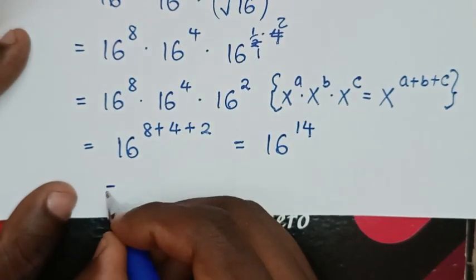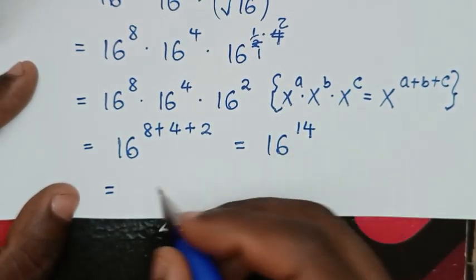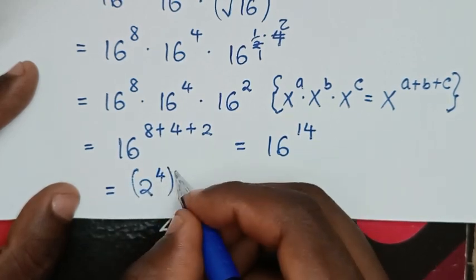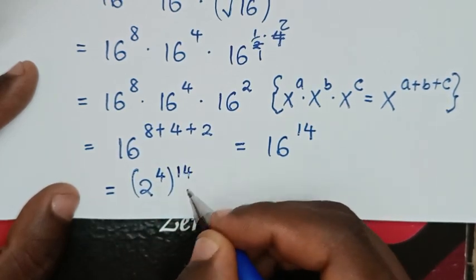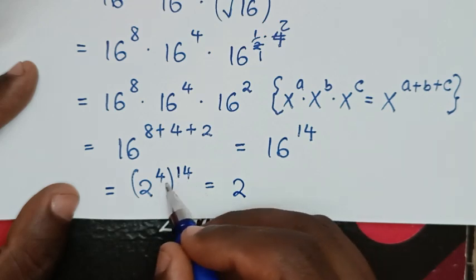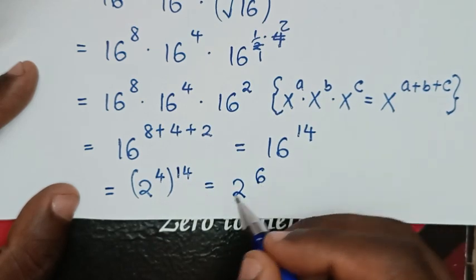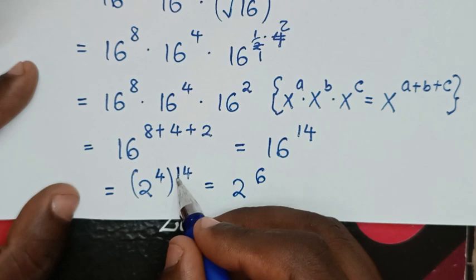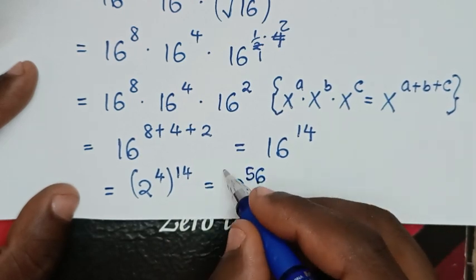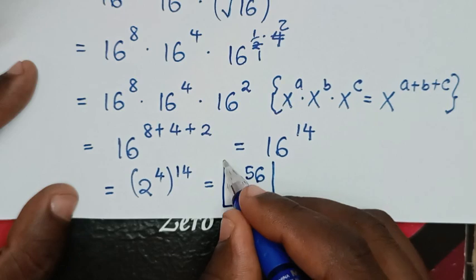Then it will be equal to 16 power of 14. Now, 16 to the base of 2: 16 is the same as 2 power of 4, bracket, power of 14, is equal to 2 power of 4 times 14. 4 times 4 is 16, carry 1; 4 times 1 is 4, plus 1 is 5. So 2 power of 56 is our final answer.